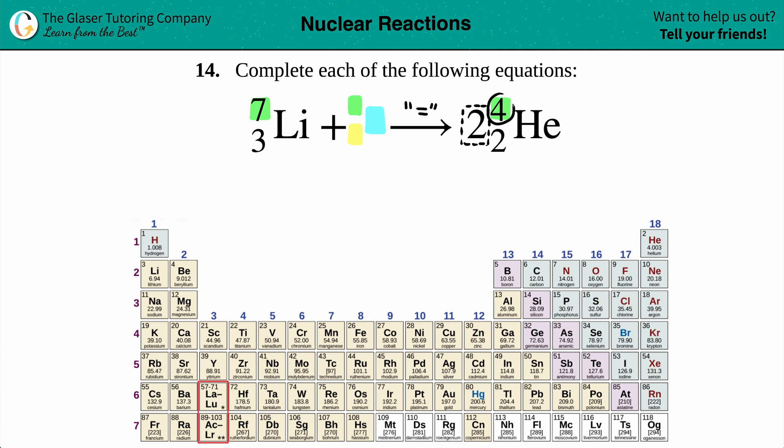So if you see that you have coefficients for your nuclear reactions, you basically have to multiply them. So seven plus X equals two times four is eight. Now, if we just do the math, you'll subtract seven on both sides, and we get X equal to one. So we know that we got a one going on on the top.